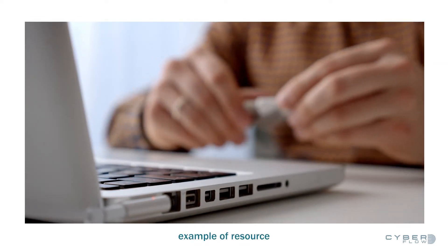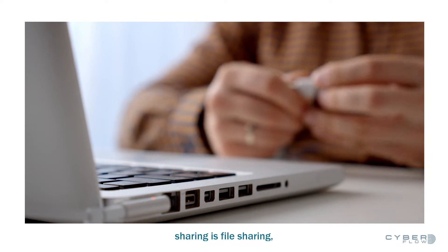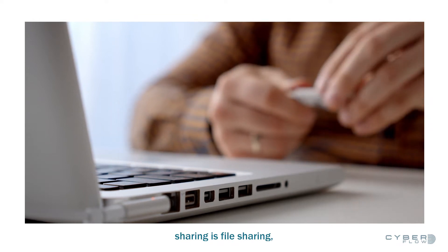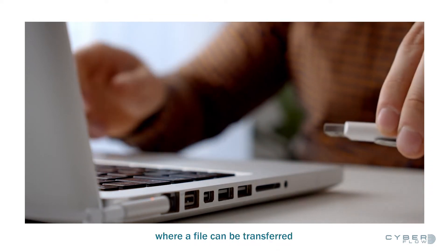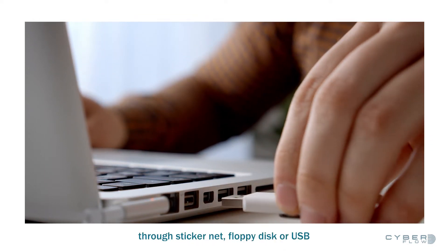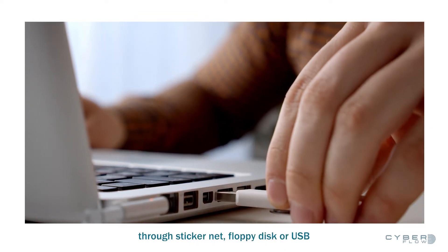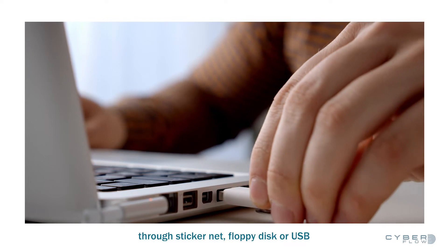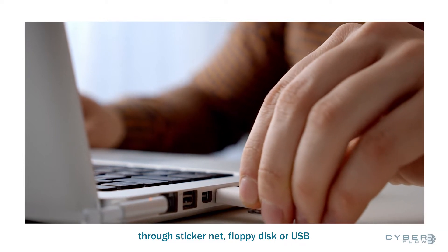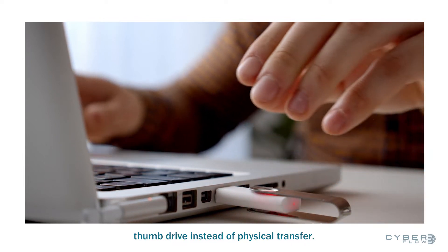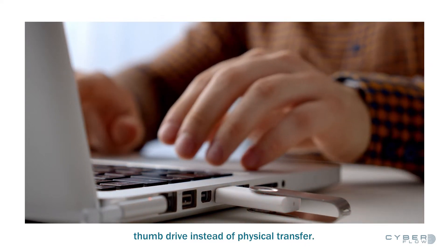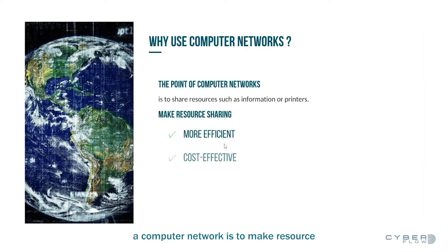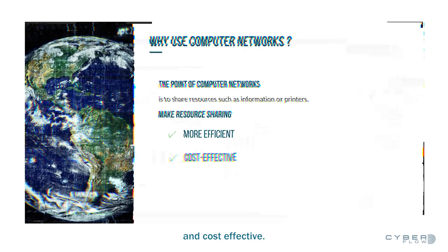Another example of resource sharing is file sharing, where a file can be transferred through sneaker net, floppy disk, or USB thumb drive instead of physical transfer. The goal of a computer network is to make resource sharing more efficient and cost-effective.